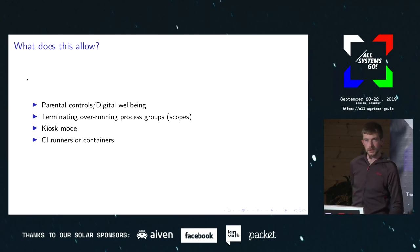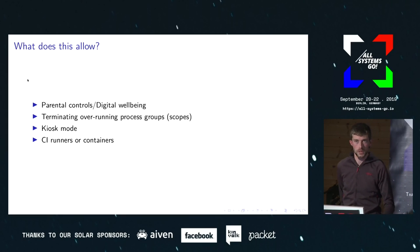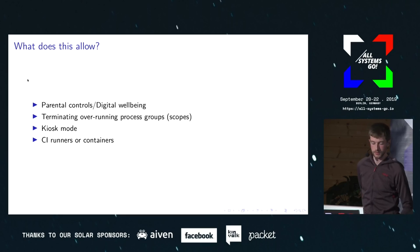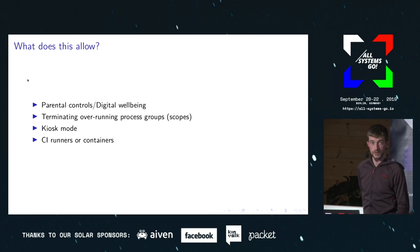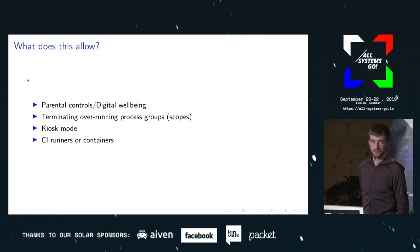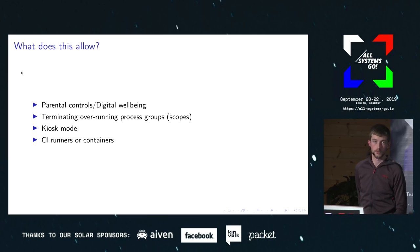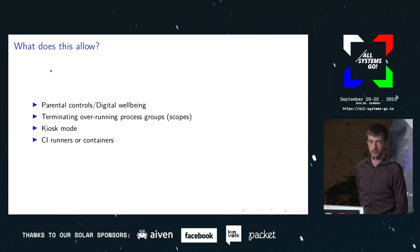With the systemd side of things, it is quite a general approach — just adding this new property to scope units — so it could allow many other things to be implemented in contexts other than the desktop. So we have parental controls and digital well-being, but you could also use it for terminating scopes of processes that you don't quite trust to finish execution in a certain amount of time. For example, continuous integration systems where tests might overrun or hang and you want to kill them all after a certain time limit. Or you could use it for a kiosk mode if you want to allow someone to use a computer in a public place for up to half an hour, and then after the half hour they get knocked off. There are many different options because it is quite general.